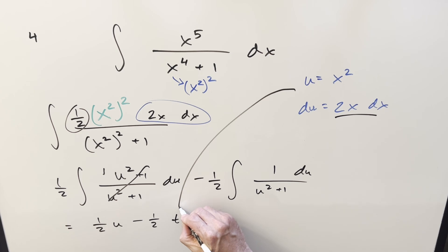Back substitute in order to finish it off. So what I have for my final solution, it's just going to be 1 half x squared minus 1 half arc tan of x squared, add a plus c, and that's it.